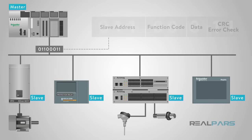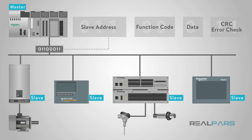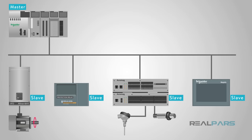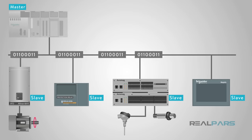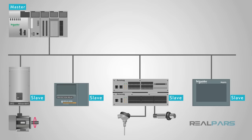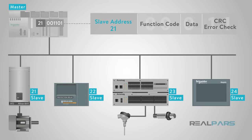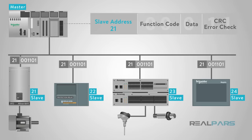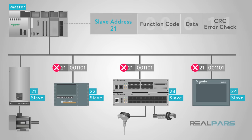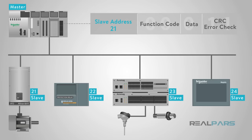Each Modbus message has the same structure. Four basic elements are present in each message, and the sequence and order of these elements are the same for all messages, allowing for easy parsing of the content. A conversation is always started by a master in the Modbus network. A Modbus master sends a message, and depending on the contents, the slave interprets and responds to it. Physical slave addressing in the message header defines which slave device should respond, and all other nodes ignore the message if the address field doesn't match their own address.